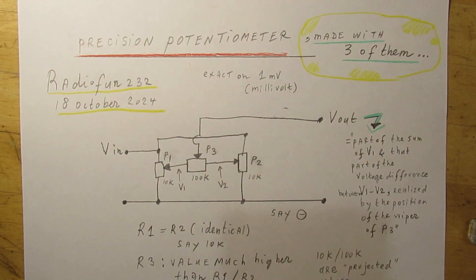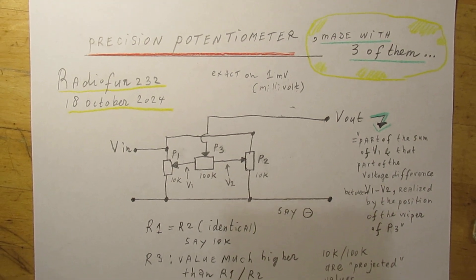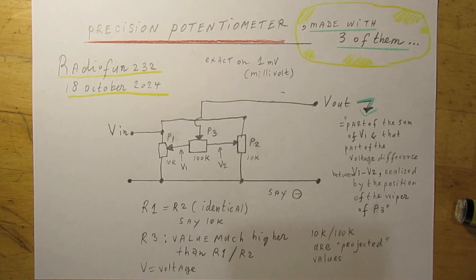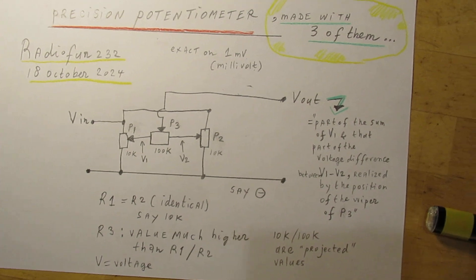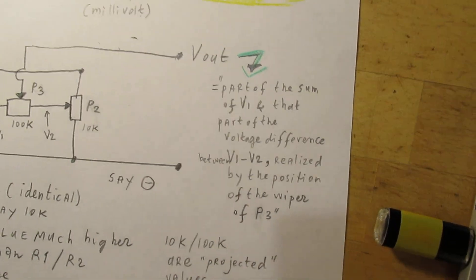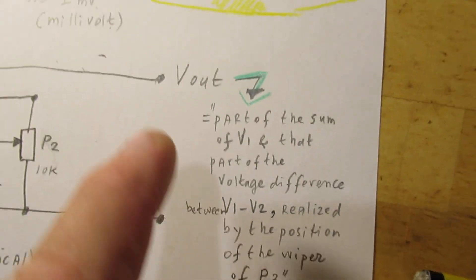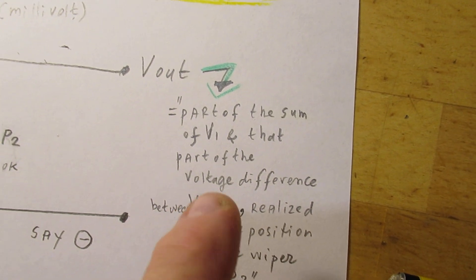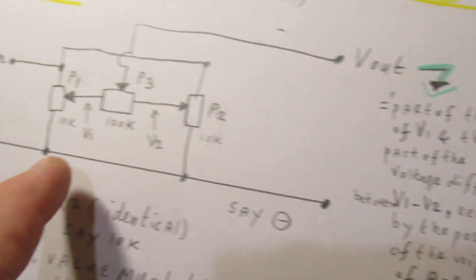So, it is a formula that you can find. What is the output voltage? Well, I have made the translation. The output voltage is part of the sum of voltage 1, that is here.